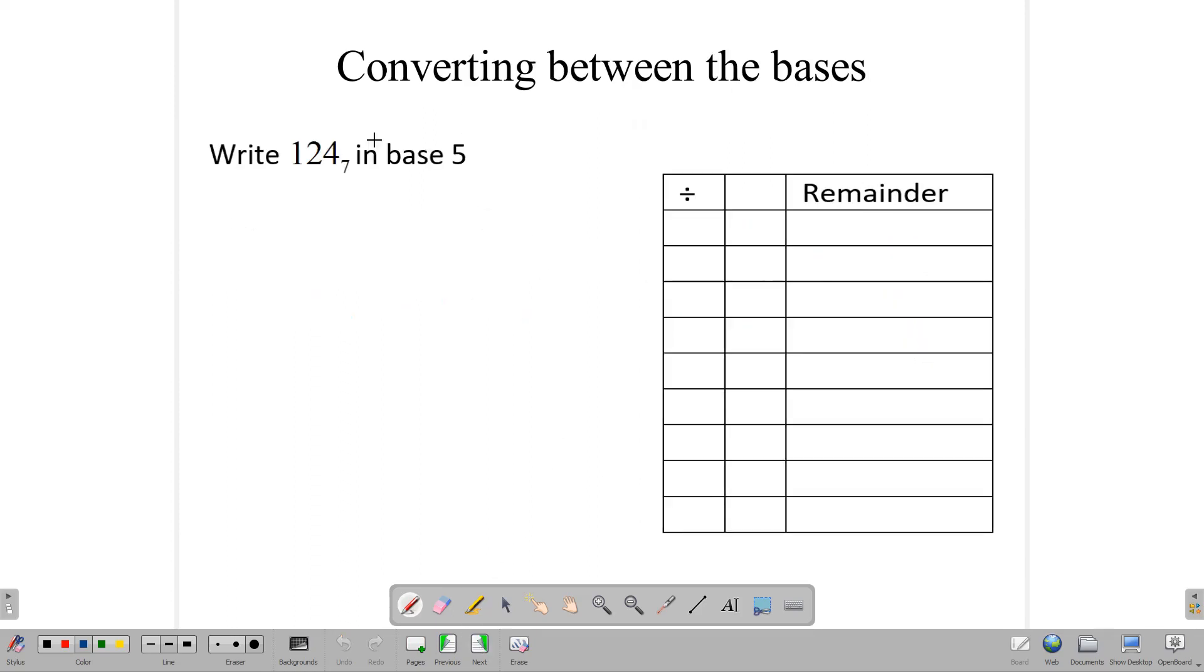All right. So that said, here's one last question that we need to look at, and that is how to convert between bases. Now, we have 124 in base 7, and we want to convert that to base 5. So how do we change 124 in base 7 to base 5? The first thing we need to do is that we need to convert to base 10. And once we convert it to base 10 first, we can then convert to other bases.